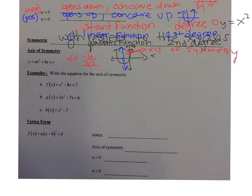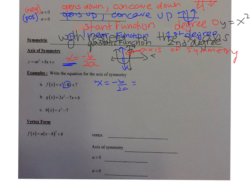Write the equation for the axis of symmetry. Remember, the axis of symmetry is an equation and it must be x equals something because it's a vertical line. For f(x) = x² - 8x + 7, x = -b / 2a. b is -8, so we get positive 8 over 2 times a, and a is 1. So x = 8/2 = 4. The axis of symmetry is x = 4.